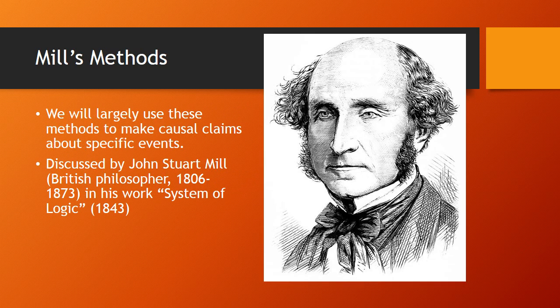When we're talking about causation among specific events, or we're trying to find the cause of a particular effect, it's useful to employ John Stuart Mill's methods of experimentation or methods of causal reasoning. John Stuart Mill was a British philosopher who was born in 1806 and died in 1873. In his work, System of Logic, he came up with five different methods of causal reasoning. In this tutorial, we will discuss two of those methods.